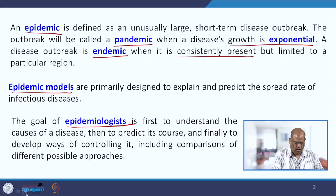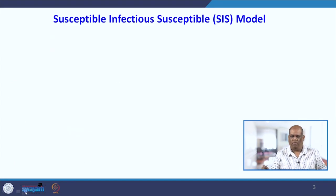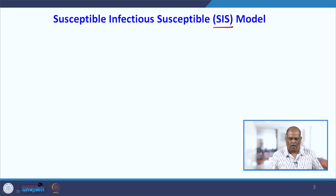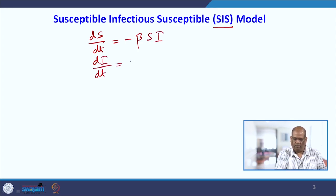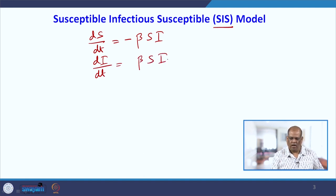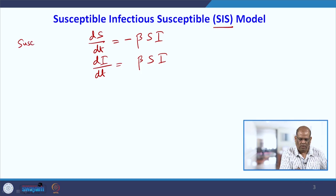Today our lecture will be on the Susceptible-Infectious-Susceptible model, in short the SIS model. In the SI model, when a susceptible person comes in contact with an infected person they get infected. So this is one class — the susceptible class — and this is the infected class.